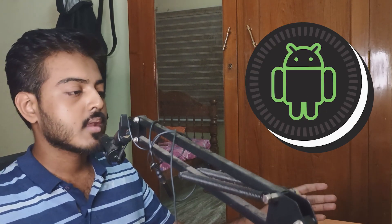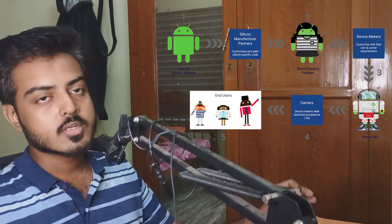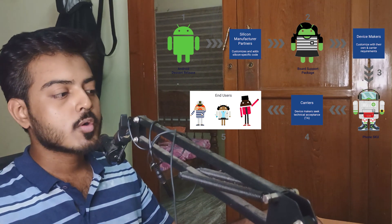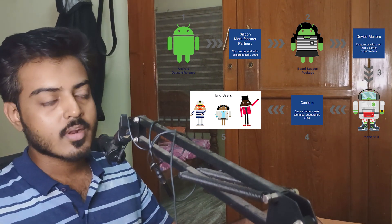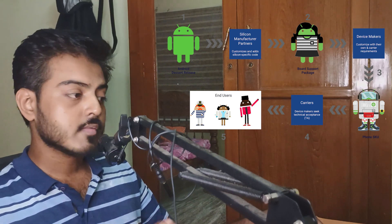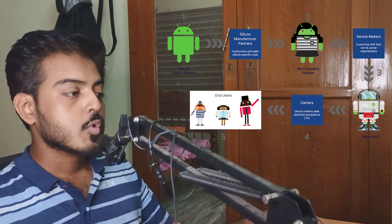First and foremost, you need an Android device which is at least on Android 8, and those devices will be supporting Google Treble. What Google Treble means is you'll be able to try a new OS whenever it comes out. It won't be a completely stable version, but you'll still be able to go through each and every feature.